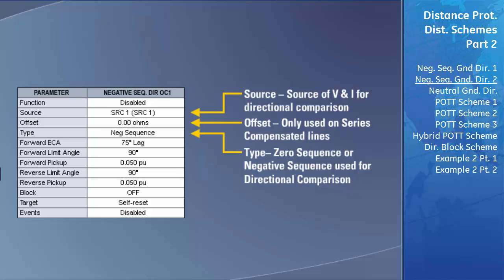In most applications, you should select the zero sequence current for ground directional detection. However, if the transmission line being protected is a paralleled line, the mutual effects can make it difficult to accurately detect the direction of current flow. In this case, the negative sequence current should be selected because the mutual effects of parallel lines are minimized. The selected type of current used to detect the direction of ground current is often known as the polarizing current.